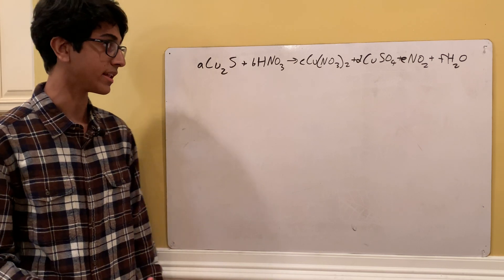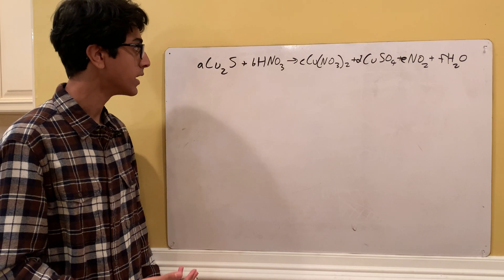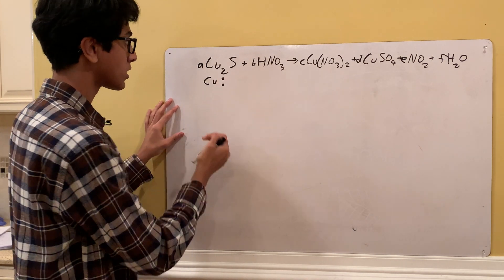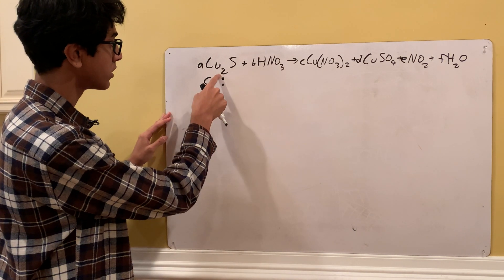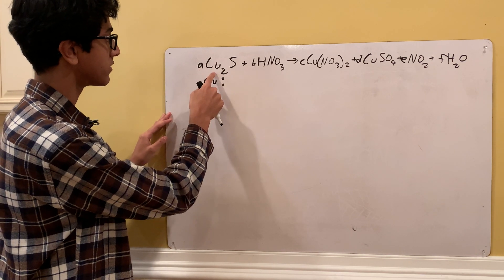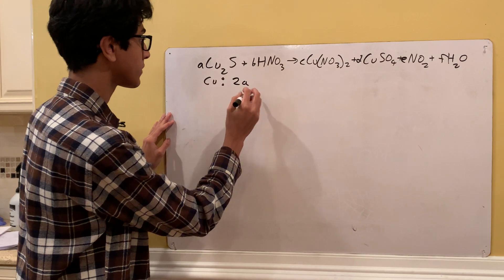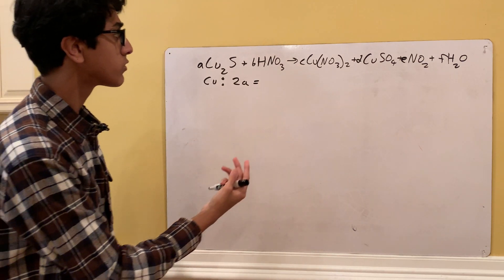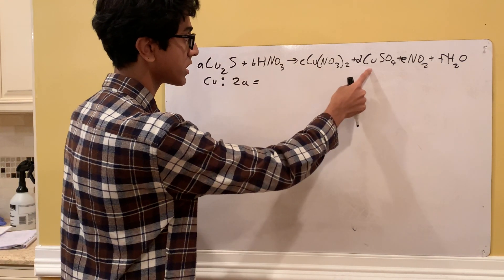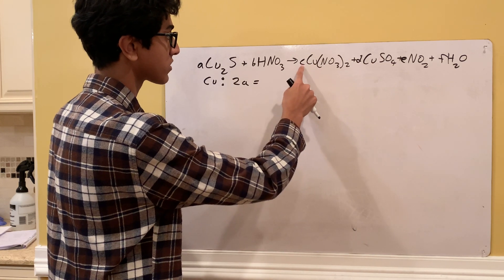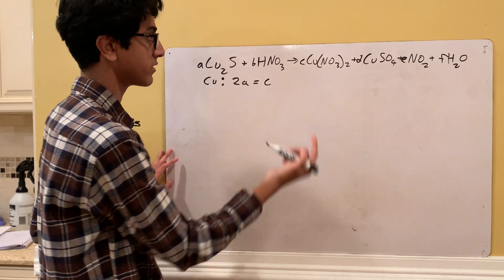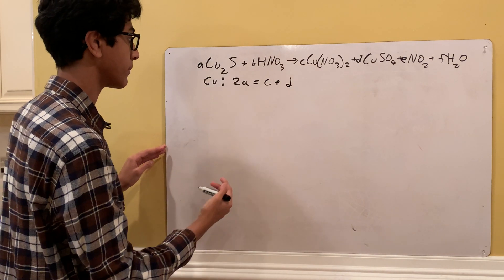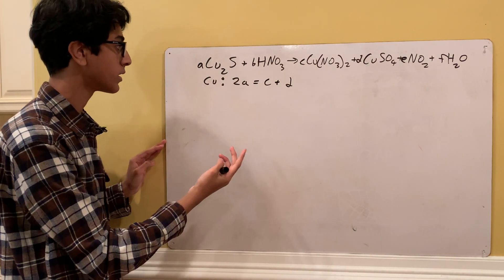The basic rule of balancing chemical equations is that you can't gain or lose an element from one side to the other. Let's use that to our advantage. Starting with Cu, on the left side we have 2 times A, so 2A. On the right side, Cu shows up in two compounds with no subscript, so it's C plus D. That gives us our first equation: 2A = C + D.